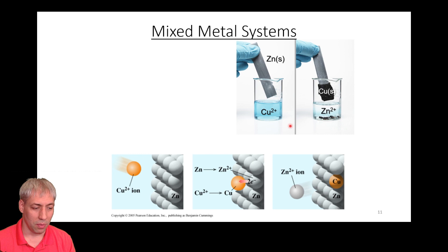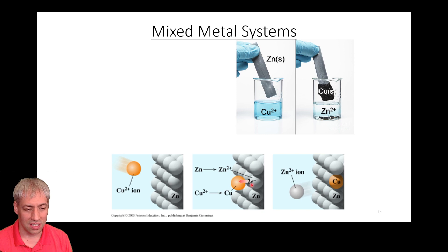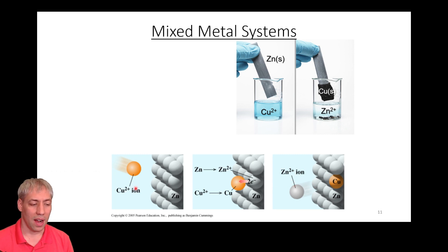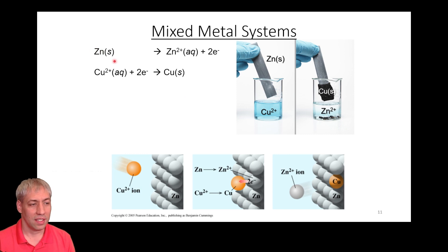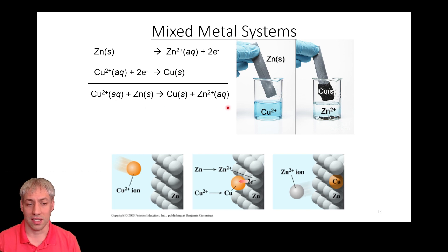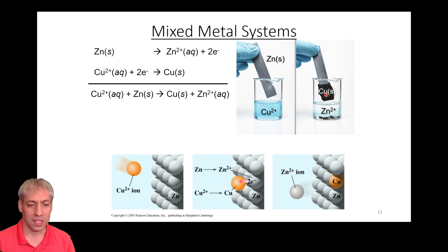At the molecular level, Cu²⁺ ions approach the zinc solid and act as an oxidant, stealing electrons. Cu²⁺ becomes copper solid, leaving behind Zn²⁺ — two electrons are transferred. The half reactions are: Zn⁰ → Zn²⁺ + 2e⁻ and Cu²⁺ + 2e⁻ → Cu⁰, giving the overall process. Electrons are flowing from zinc to copper, moving from Zn⁰ to Cu²⁺, giving you Zn²⁺ and Cu⁰.